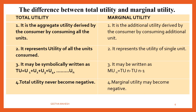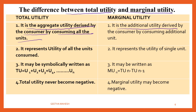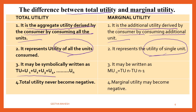Now let us discuss the difference between total utility and marginal utility. Total utility is the aggregate utility derived by a consumer by consuming all the units, while marginal utility refers to the additional utility derived by consuming an additional unit. Total utility deals with all units; marginal utility represents the utility derived from a single unit. Symbolically, TU equals U1 plus U2 plus U3 plus U4 and so on, while MU(n) equals TU(n) minus TU(n-1). Total utility will never become negative but marginal utility may become negative.